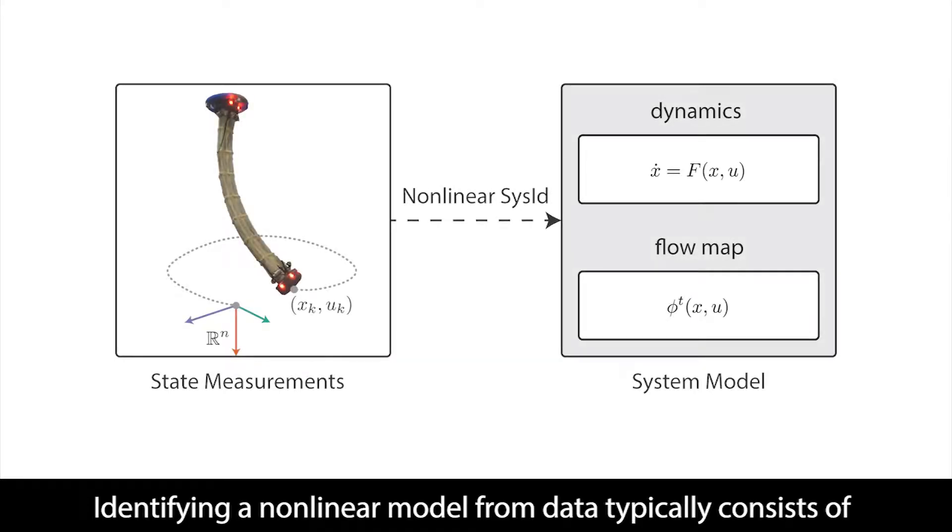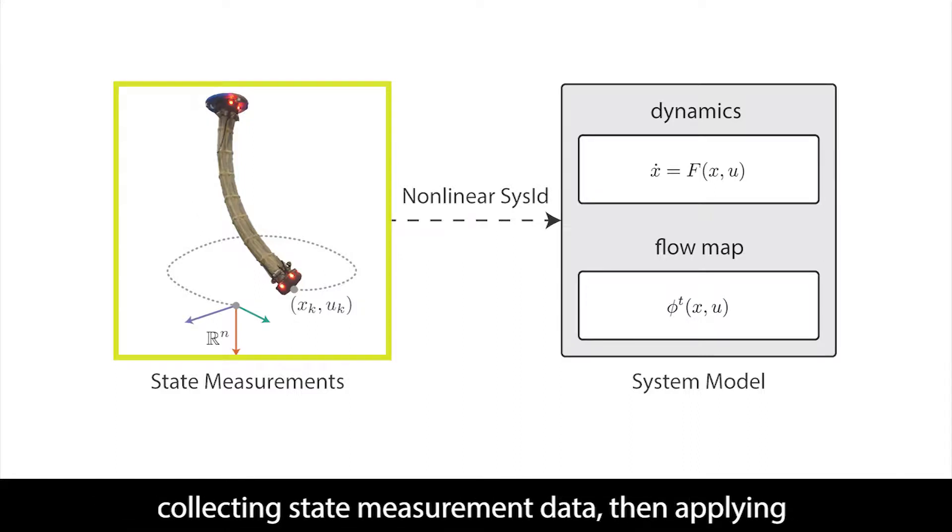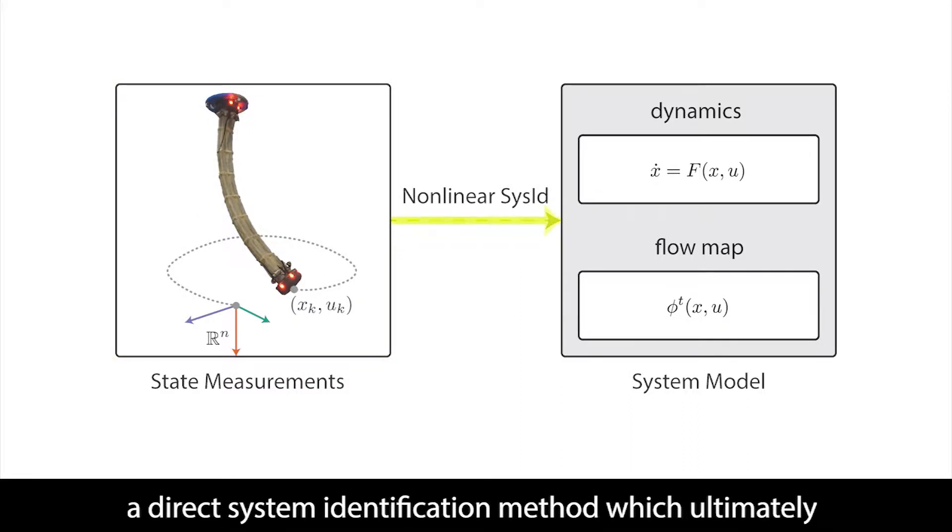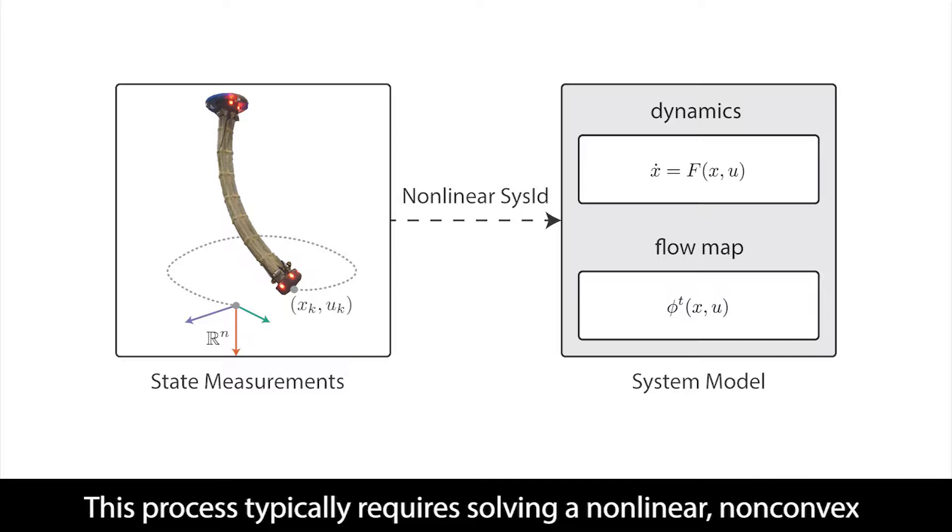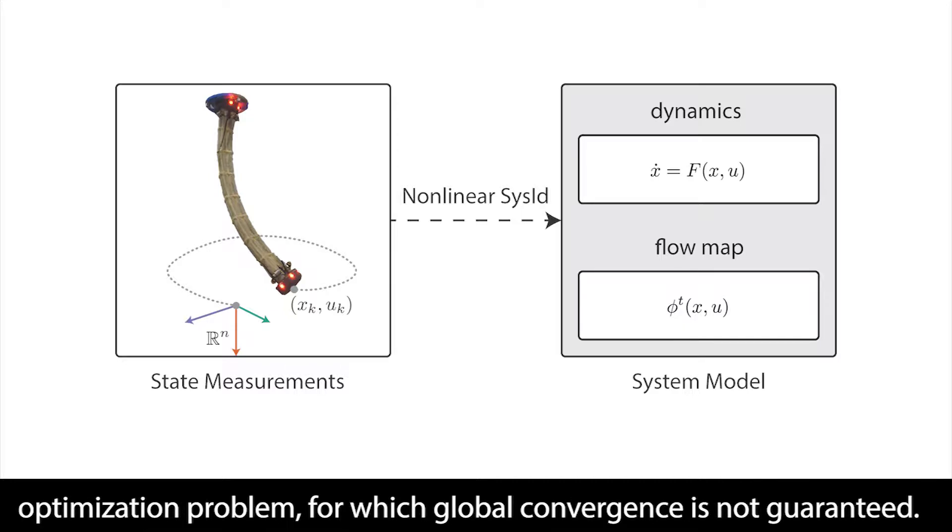Identifying a nonlinear model from data typically consists of collecting state measurement data, then applying a direct system identification method, which ultimately yields a system model. This process typically requires solving a nonlinear, non-convex optimization problem for which global convergence is not guaranteed.